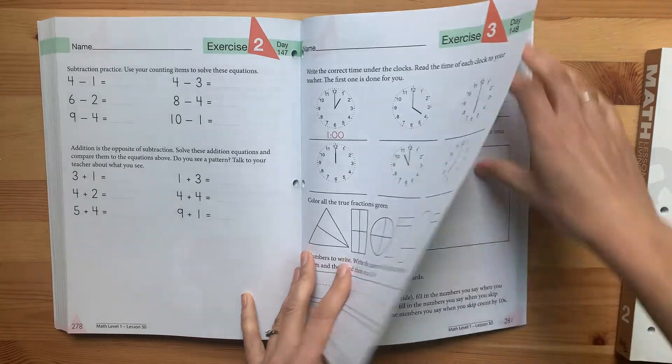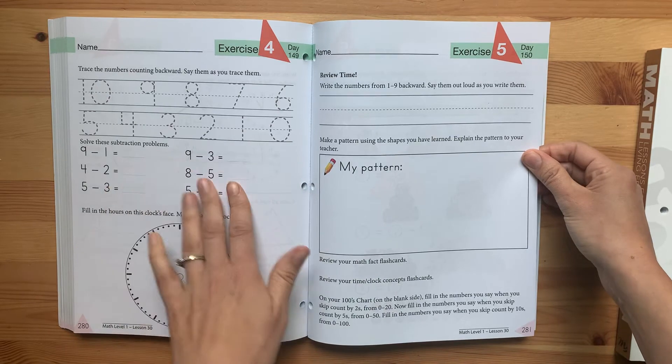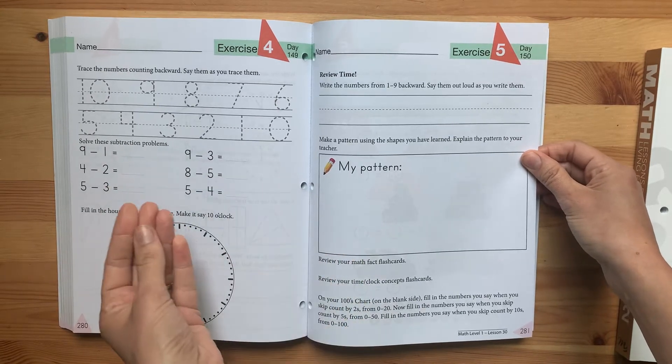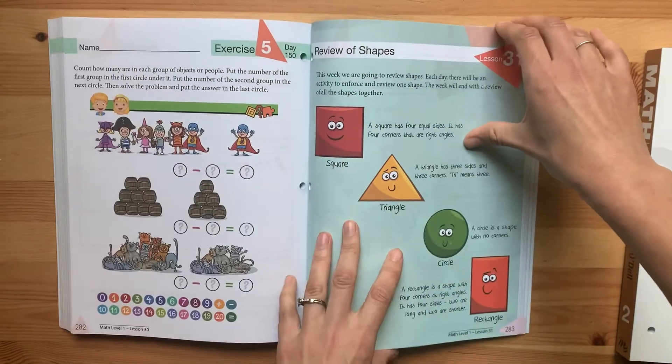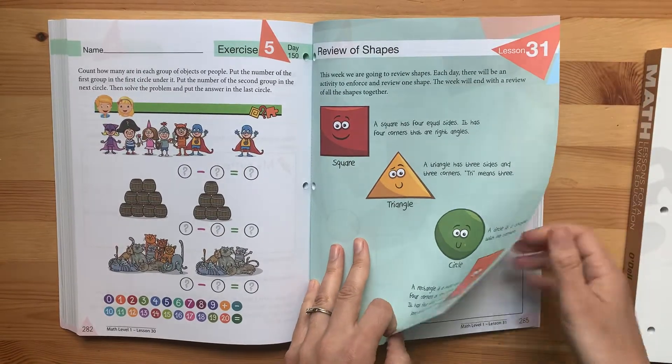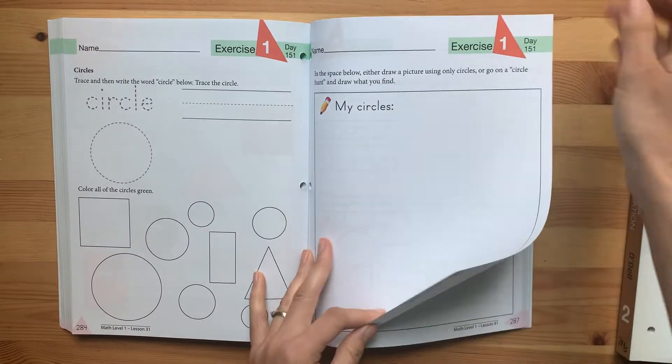Again, this would be a really good time to get manipulatives for any of these. If your child just can't really see what's nine minus three and they're not getting it, that's when I would grab blocks or rocks or beans and just physically separate the numbers.